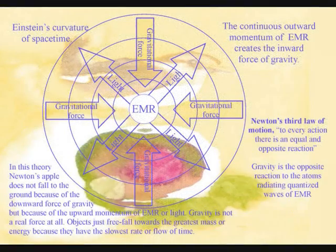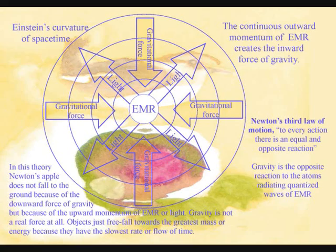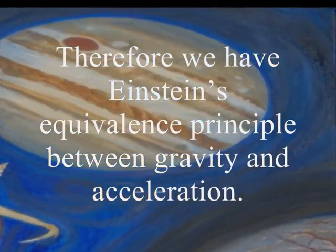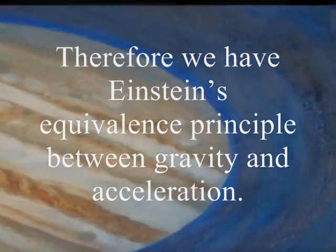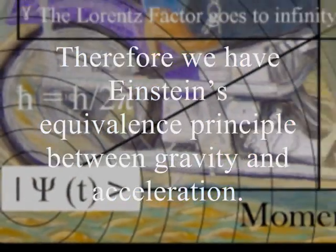In this theory, gravity is a secondary force to the electromagnetic force. Objects just freefall towards the greatest mass or energy because it has the slowest rate that time flows.